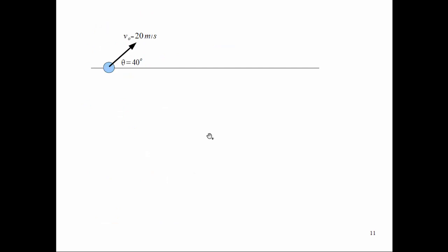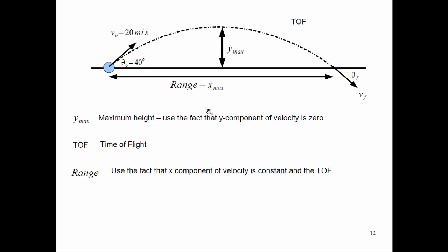Let's look at an example. We're going to launch a ball from the ground at 20 meters per second at an angle of 40 degrees, let it fly through the air, and land some distance away. It will reach a maximum height and then come back down. If it starts and stops at the same height, this maximum X distance is called the range. We also have the maximum height, Y max.